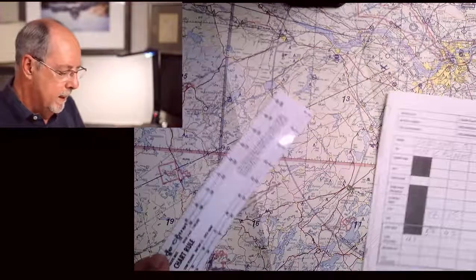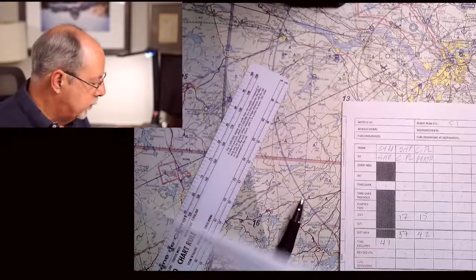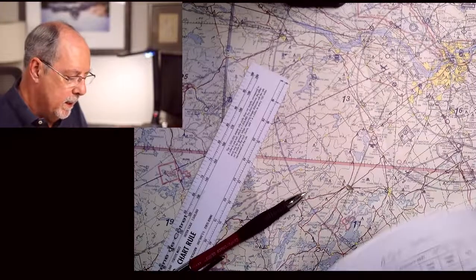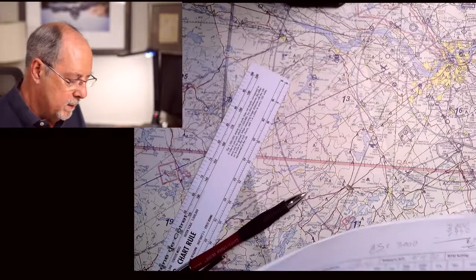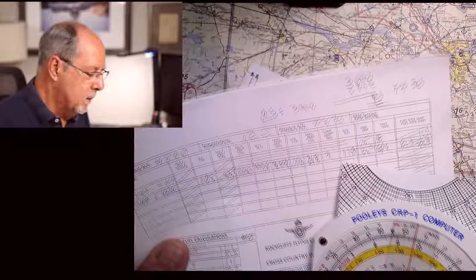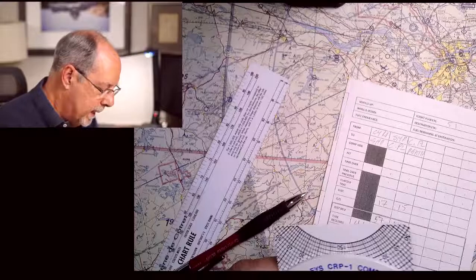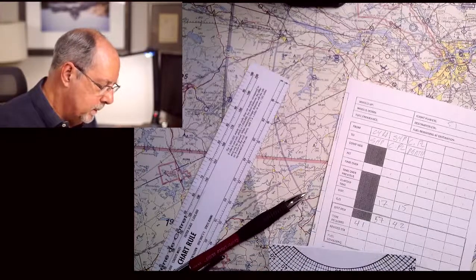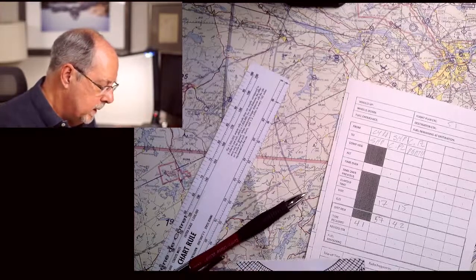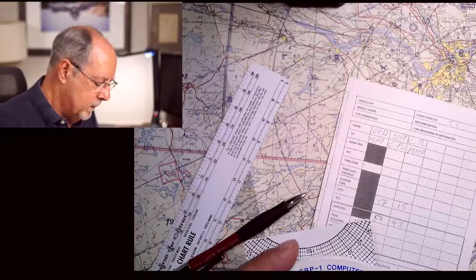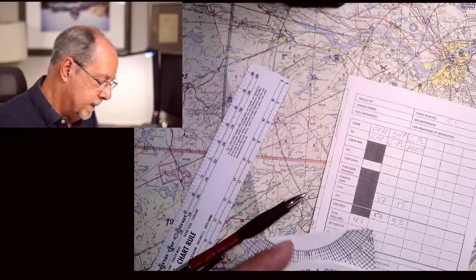The other thing I need to do is set up my E6B, my Pooleys, with my expected ground speed. So my expected ground speed is going to be 110. So I'm actually going to set it up with that. 110 miles over 60 minutes. So that's 110 knots.